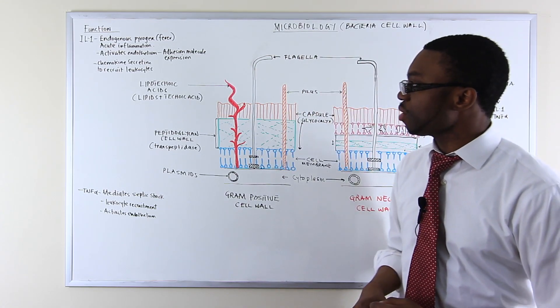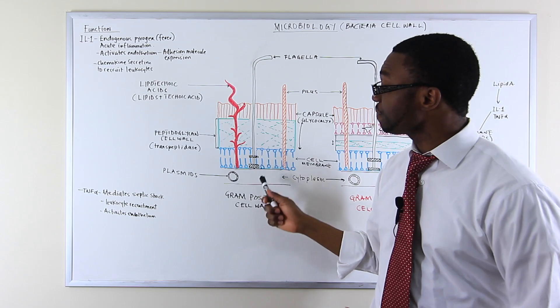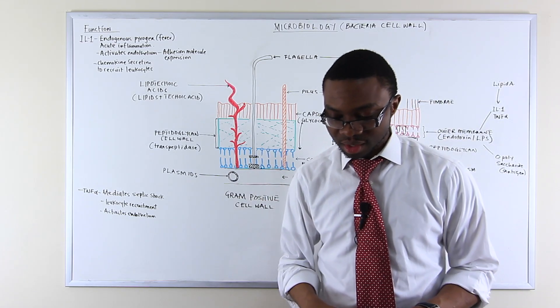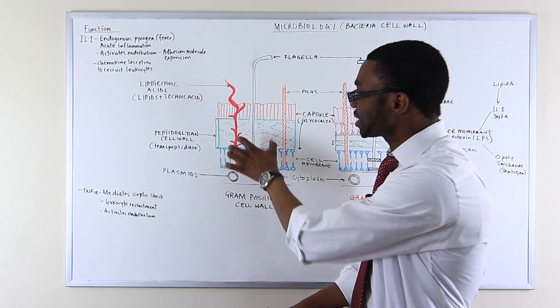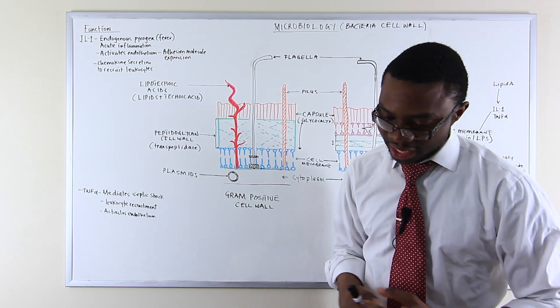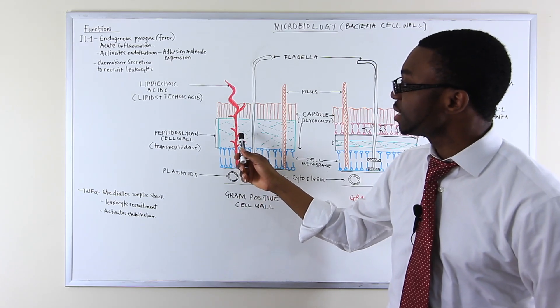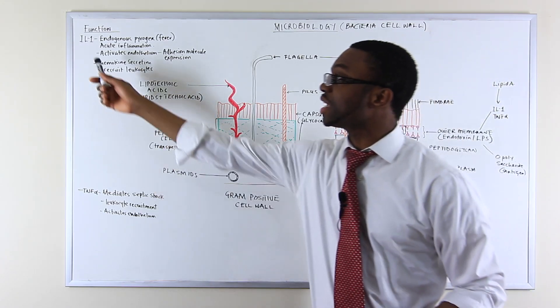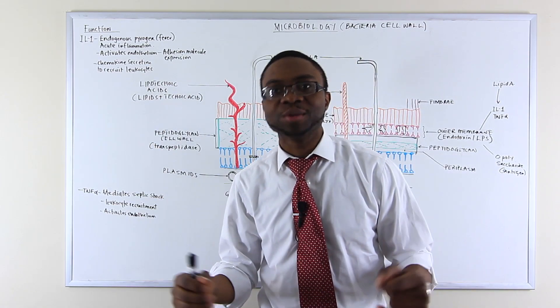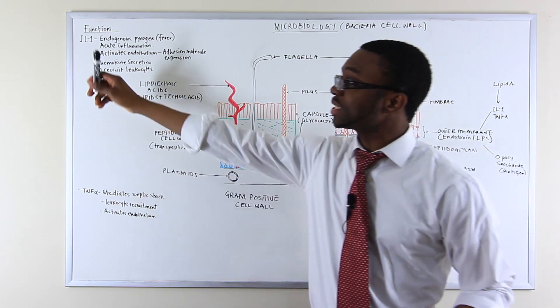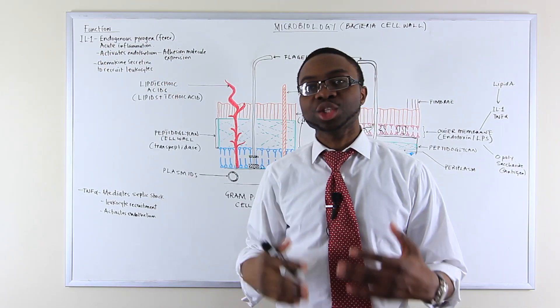The next component we need to know is lipotechoic acid. Lipotechoic acid is only found in gram-positive bacteria. What it does is it provides cell wall rigidity. It keeps these cell walls nice and rigid, especially in gram-positive bacteria. But also, it induces the production of interleukin-1 and tumor necrosis factor alpha. What is interleukin-1? Interleukin-1, its function causes endogenous pyrogen.